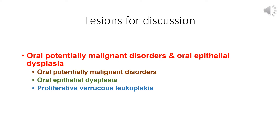Under the WHO classification system, there are three main categories of precursor lesions: oral potentially malignant disorders, which are clinically diagnosed; oral epithelial dysplasia, diagnosed on cytology and histopathology; and proliferative verrucous leukoplakia as the third entity.